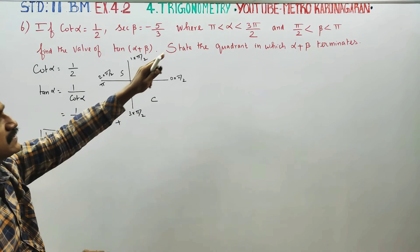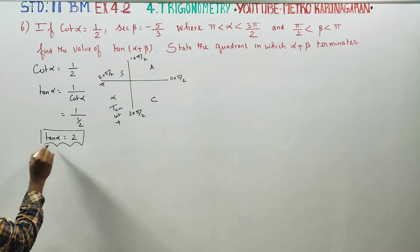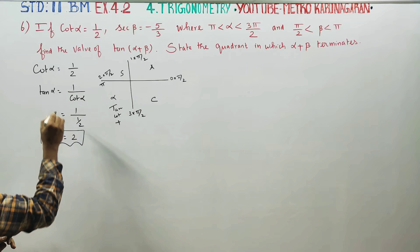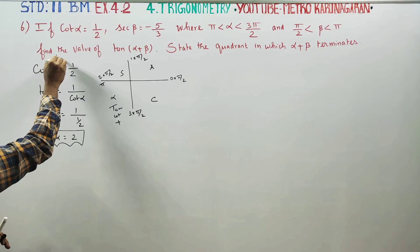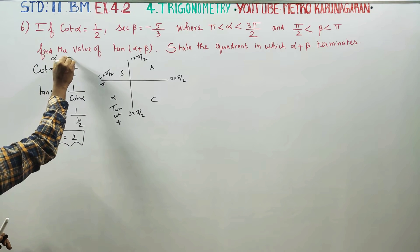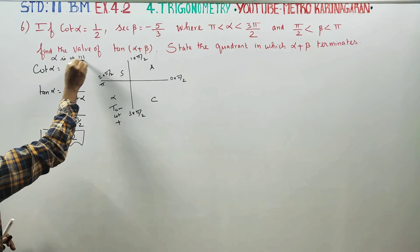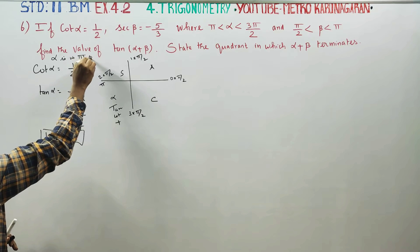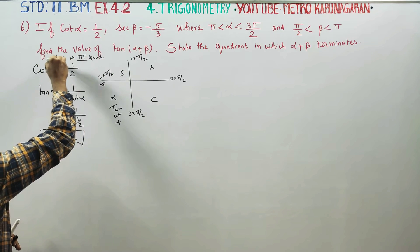Because alpha is in the third quadrant. In the third quadrant, tan is positive and all others are negative. Alpha is in the third quadrant, so tan alpha is positive.